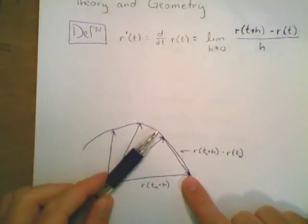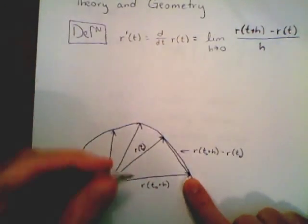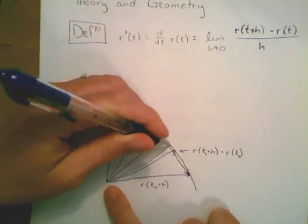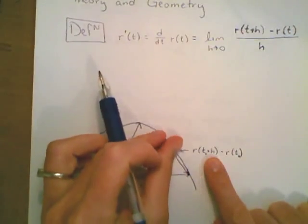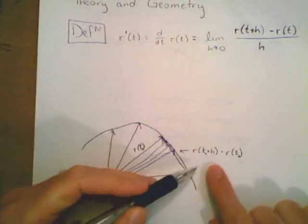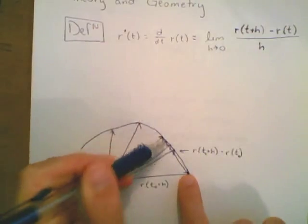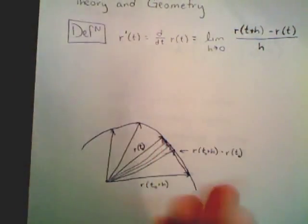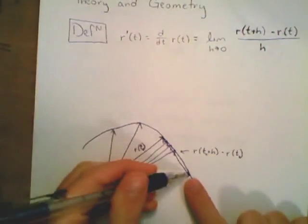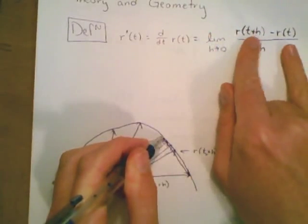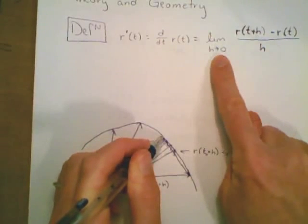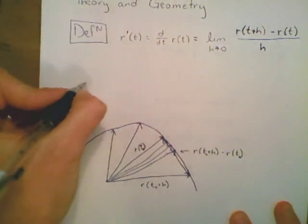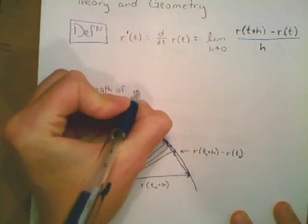As the h value gets smaller and smaller, less time elapses between r of t and r of t plus h. As h approaches zero, the vectors r of t plus h get closer and closer to r of t, and this difference vector gets shorter and shorter. Visually, this difference is the limit of all these secant vectors, and the limiting vector is going to be exactly tangent at this point. But the limit of the difference alone is a vector of length zero — the derivative is this vector divided by h, which is also going to zero.